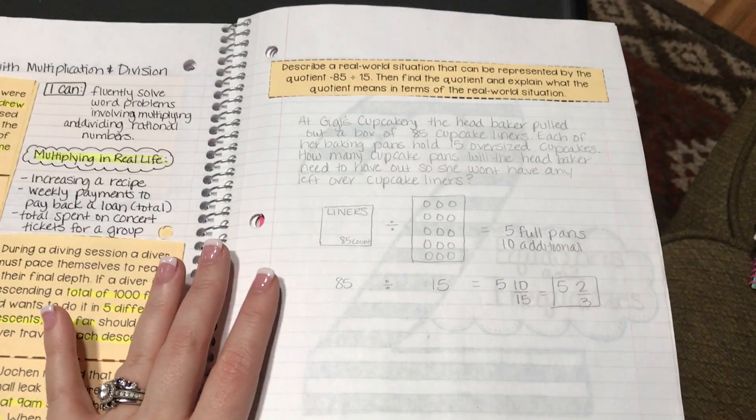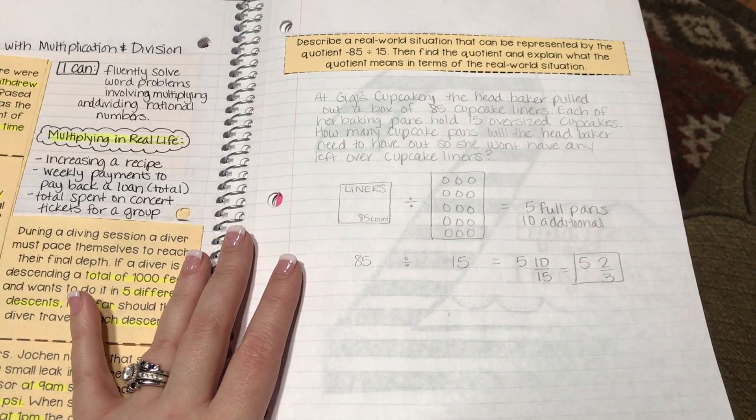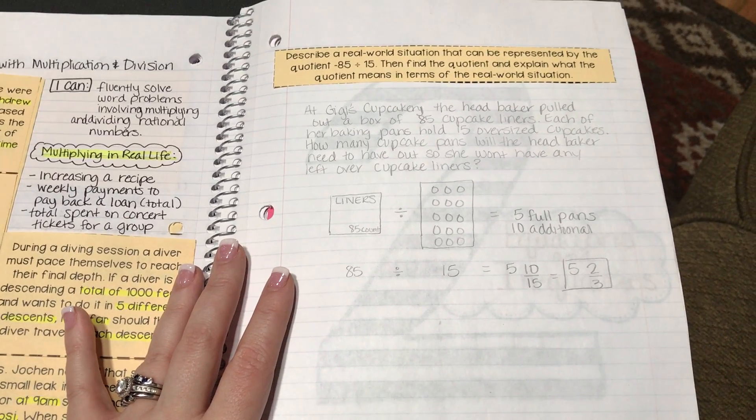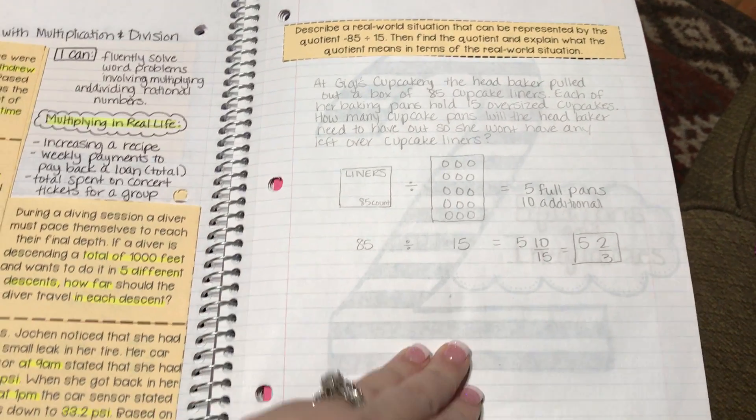The follow-up is: describe a real world situation that can be represented by the quotient negative 85 divided by 15, then find the quotient and explain what the quotient means in terms of the real world situation.